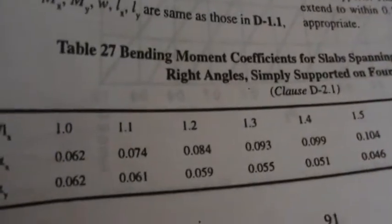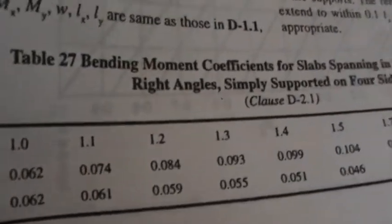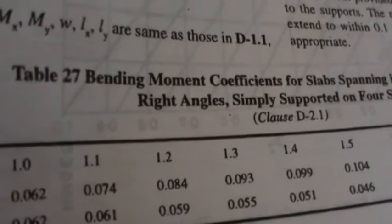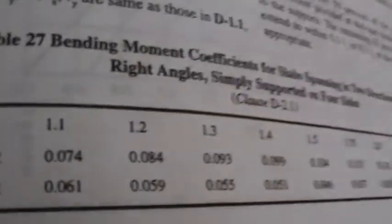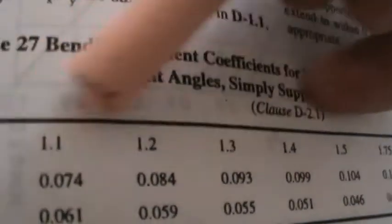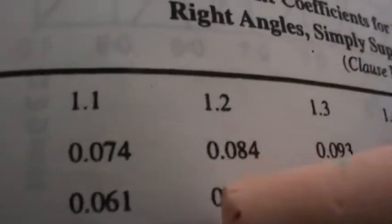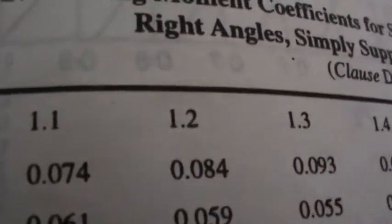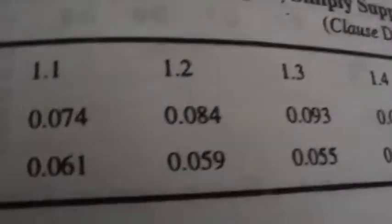It is 1.24. But 1.24 is not there in your code. But this value lies in between 1.2 and 1.3. So now we have to take the values from this table, alpha X values and alpha Y values and then interpolate them.